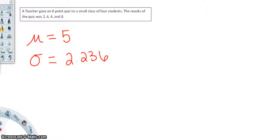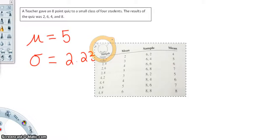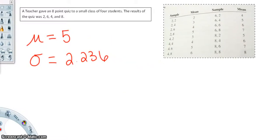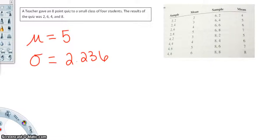When we put the distribution on a frequency chart, you'll see it is a uniform distribution, because each quiz score has a frequency of 1. Now when we take samples of size 2 using replacement, we have combinations like 2 and 2, giving a mean of 2, or 2 and 4, giving a mean of 3. These are all the samples we could create of size 2 with replacement using the numbers we have.